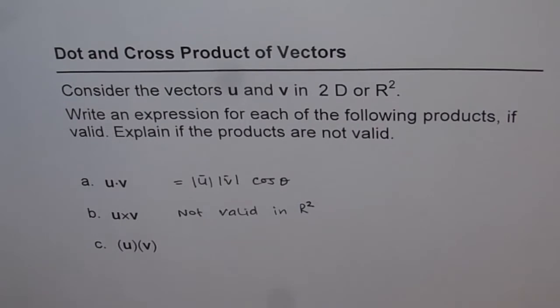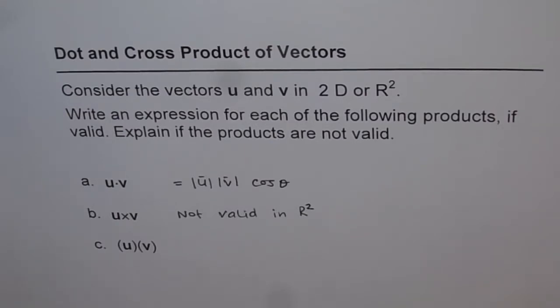Since u cross v is a vector in a plane perpendicular to R², it cannot be contained in R². Therefore, u cross v is not valid in R².